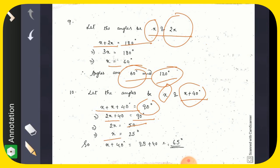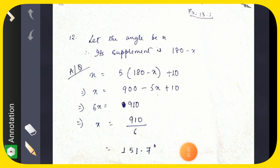Number 11 is exactly the same: you have to find the measure of an angle that is 60 degrees less than its supplement. You try yourself just like number 10. Now number 12: you have to find an angle that is 10 degrees more than 5 times its supplement. If the angle is x, its supplement is 180 minus x.